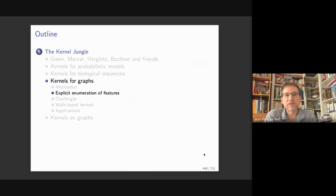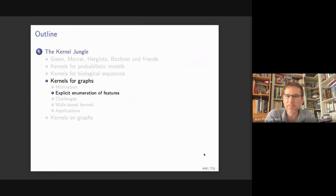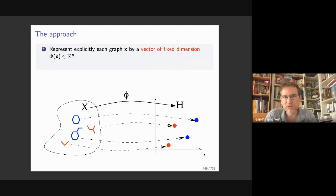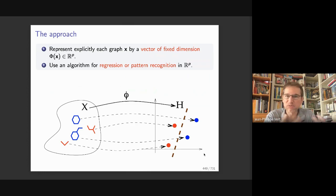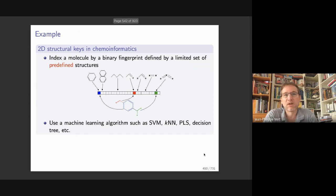Let's start by discussing how to represent a graph as a vector. We ask: can we design a mapping phi that transforms any graph x into a finite-dimensional vector? If so, we obtain a data matrix where each graph is a vector, and we can use any standard method for vector analysis to learn a model for graphs. The question is: what ideas do we have for phi, and what constraints must we be careful about?